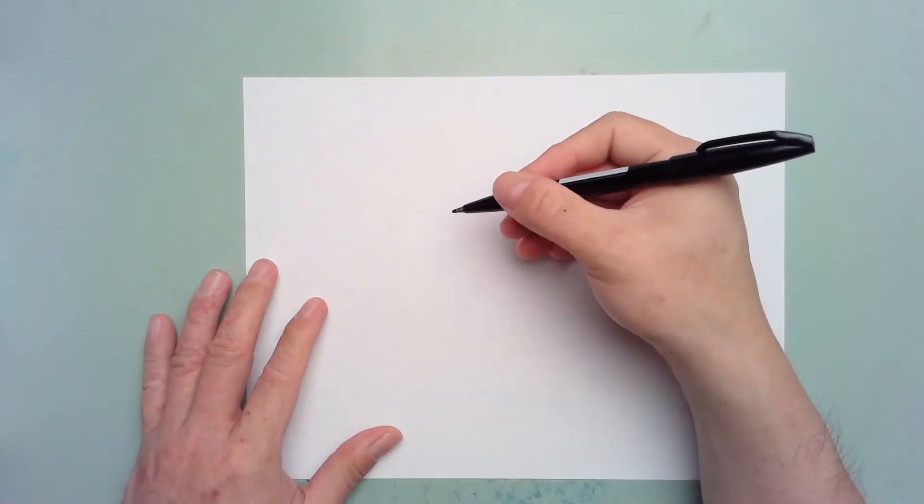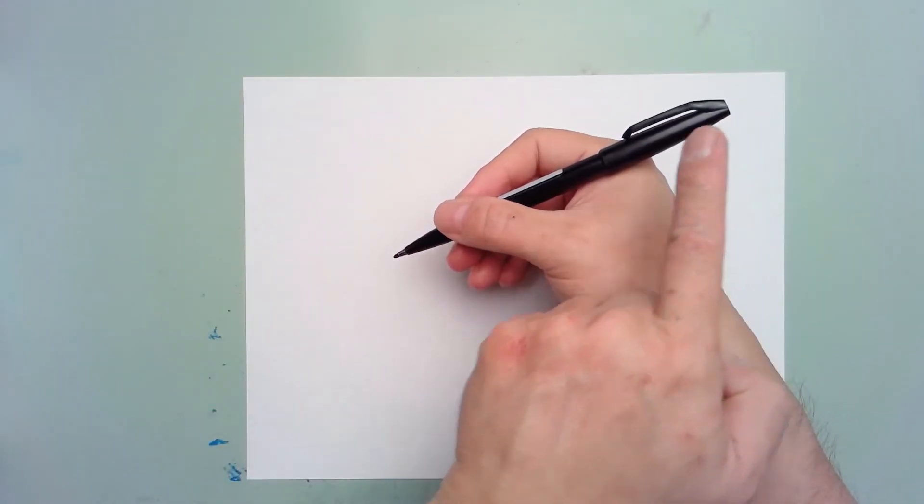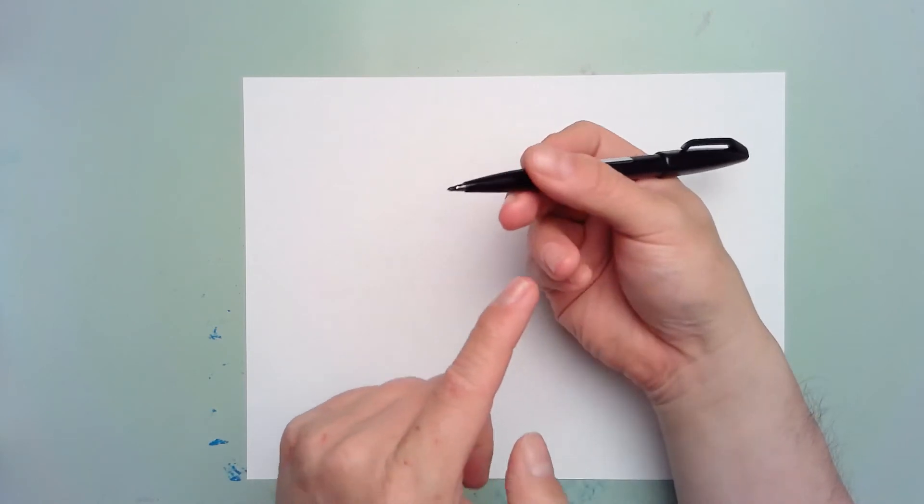Hold your pen or pencil at about a 45-degree angle with a chopstick grip about halfway up the pen or pencil.